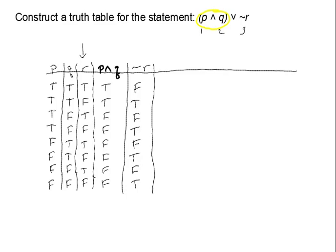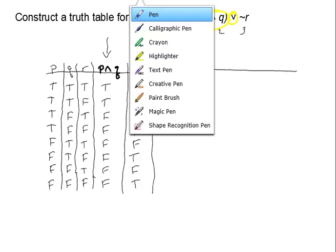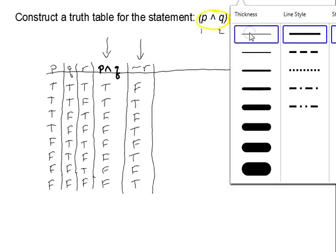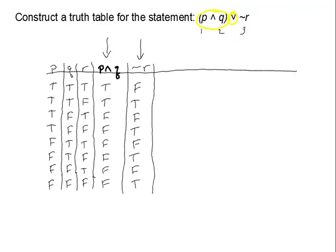The very last thing I am going to do now is take these two columns I have formed — I've got my P and Q from my parentheses, and I've got my squiggly R — and I'm going to connect them with the disjunction, the 'or' statement. I'll do that as my last column for (P and Q) or squiggly R.